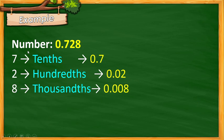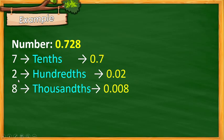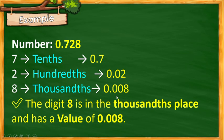Next example: 0.728, or 728 thousandths. 7 is in the tenths place, therefore we have 7 tenths or 0.7. 2 is in the hundredths place, therefore we have 2 hundredths or 0.02. Then 8 is in the thousandths place, therefore we have 0.008, read as 8 thousandths.